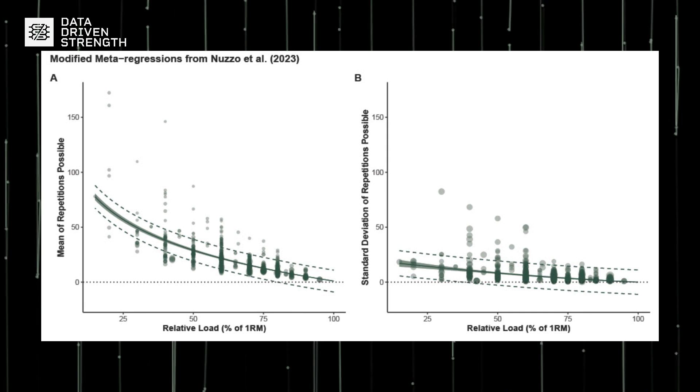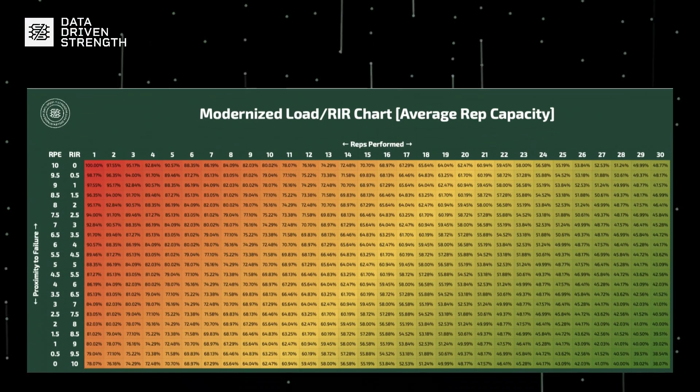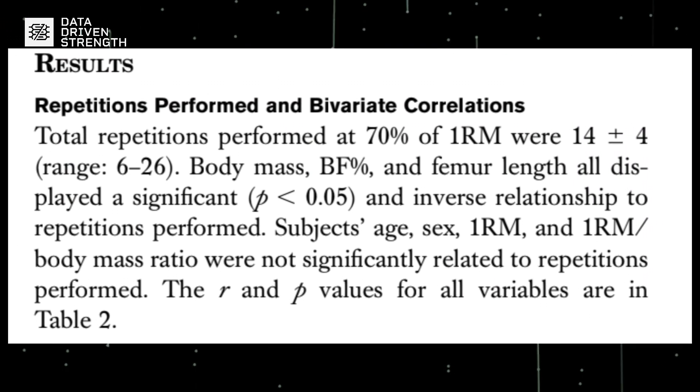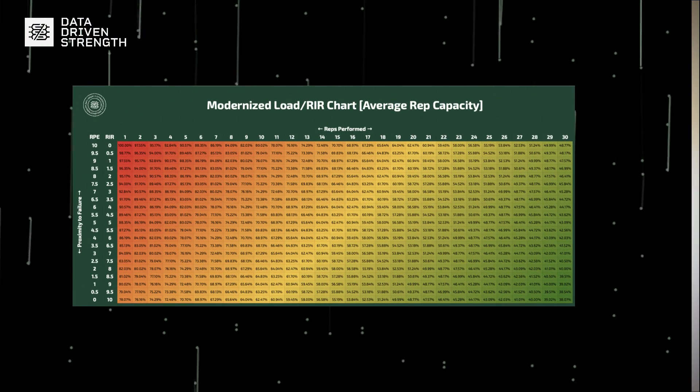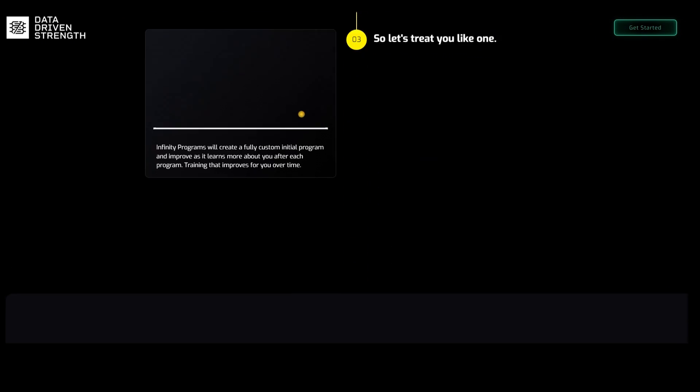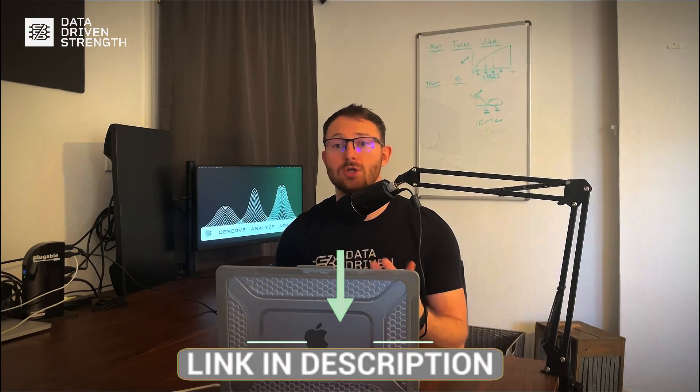With these adjusted models in hand, we can now change the game with regards to estimated 1RM calculations. To create a modernized load and RIR chart, I extracted predictions from these models at increments of 0.01% of 1RM. Then, for each rep max value in half-repetition increments to account for half RPEs, I located the percentage of 1RM closest to the desired value, and by referencing equalities — such as a 5RM being equivalent to 3 reps at a 2 RIR — you have the entire table. Using the predicted standard deviation, I also created tables for low and high rep capacities, corresponding to individuals or exercises where an abnormal number of repetitions could be performed. These tables are reflected in our Infinity programming system, and a link in the description lets you download them for free.